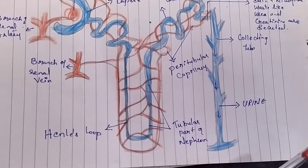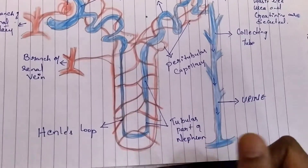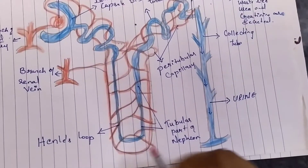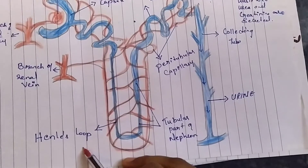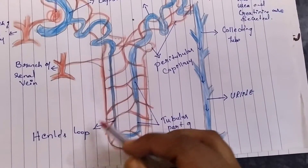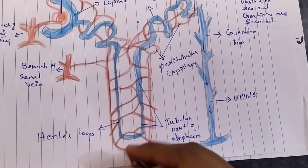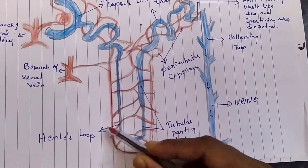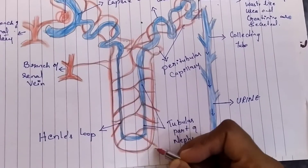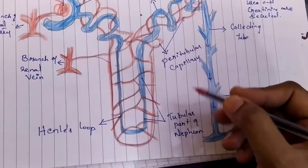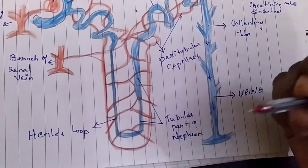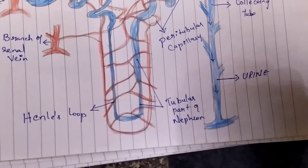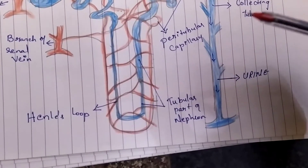In the ascending limb, active absorption of sodium chloride takes place without the help of water. In Henle's loop, water from the nephric filtrate is reabsorbed into the blood by the process of osmosis in the region of Henle's loop and the distal convoluted tubules. If the blood contains more water, the reabsorption of water is less, and diluted urine is excreted out from the body.